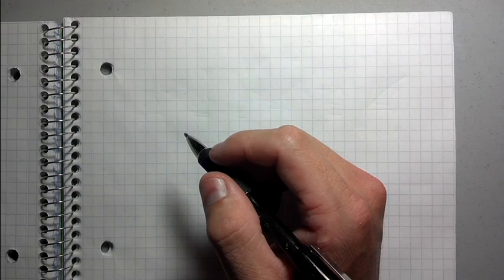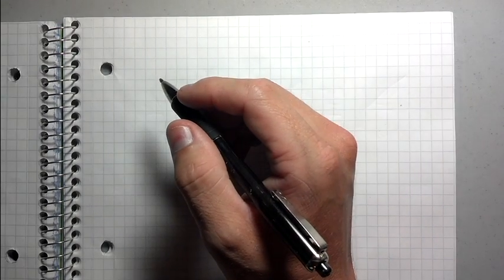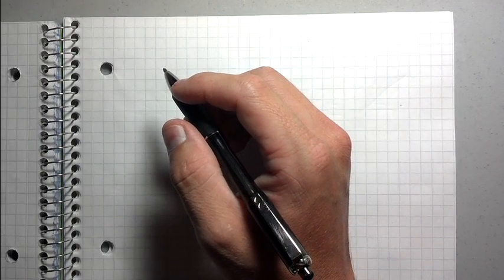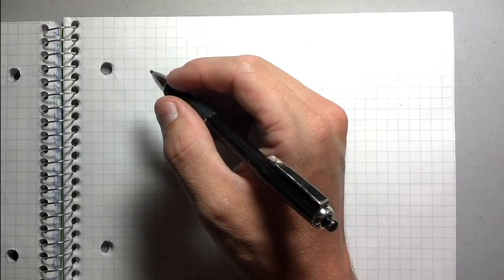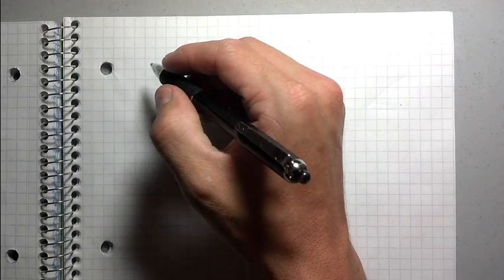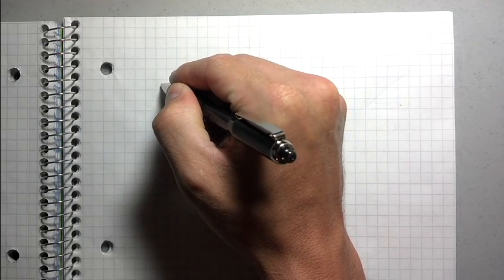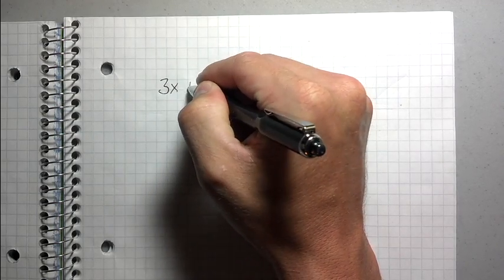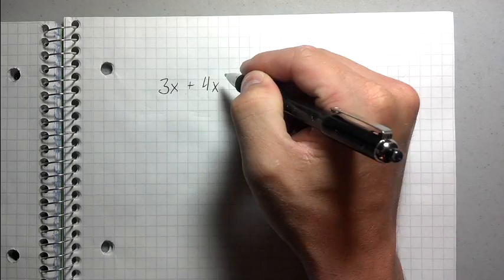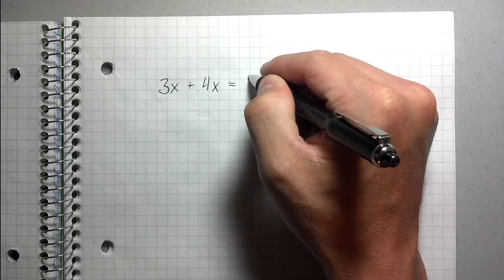So I'll just throw some examples out here, okay? And I'm going to go real slow and be real systematic so you can see every step of the way what I'm doing. Alright, so let's say we had an equation like this: 3x plus 4x equals 14.